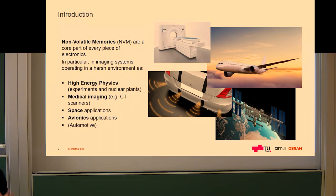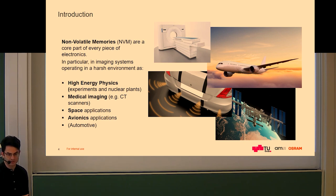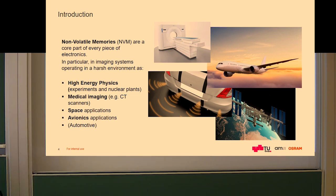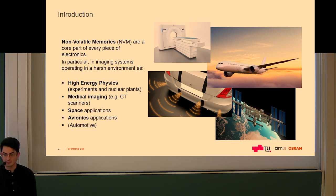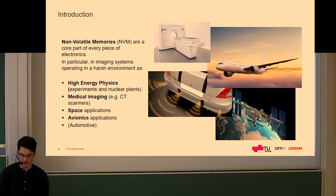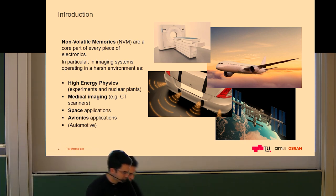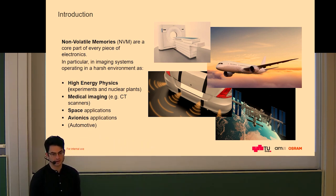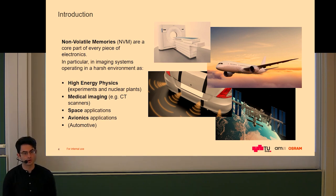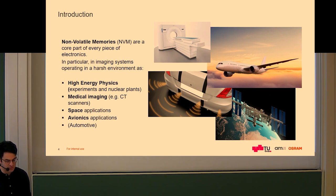We all more or less know non-volatile memories, at least from a concept point of view. They are used in all electronics — whenever you have electronics, you also need some sort of memory device to store your data. The definition of non-volatile memory is that it retains data after the power is shut down, in opposition to volatile memories such as RAMs. They are used in many fields, from the SD card in your phone to the small memories that store the calibration of a LED inside the sensors of your car.